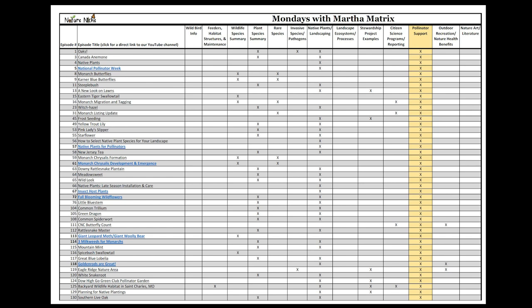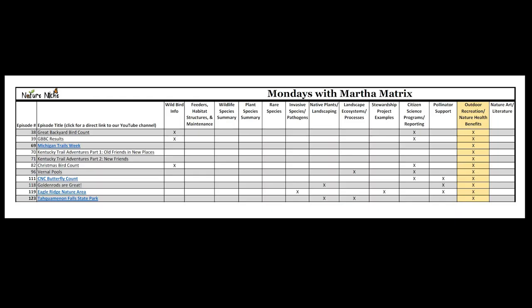The pollinator support category is another big, diverse one. We've talked about National Pollinator Week, good native plants to support pollinators, lots of information about monarch rearing and development, the important relationship between native insects and their native host plants, fall blooming wildflowers to support pollinators, and deep dives on species we've reared in-store like the giant leopard moth, giant woolly bear caterpillars, three main milkweed species for supporting monarchs, and why goldenrods are great for pollinator support.